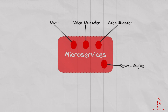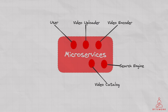The search engine will be built using Elasticsearch for fast and efficient search. The search engine will use the video metadata stored in the NoSQL database to provide search results. The Video Catalog service would store metadata about each video, such as title, description, tags, and so on. It would also store information about the video's location on the storage service and its different encodings, and could use a NoSQL database like MongoDB for this purpose.